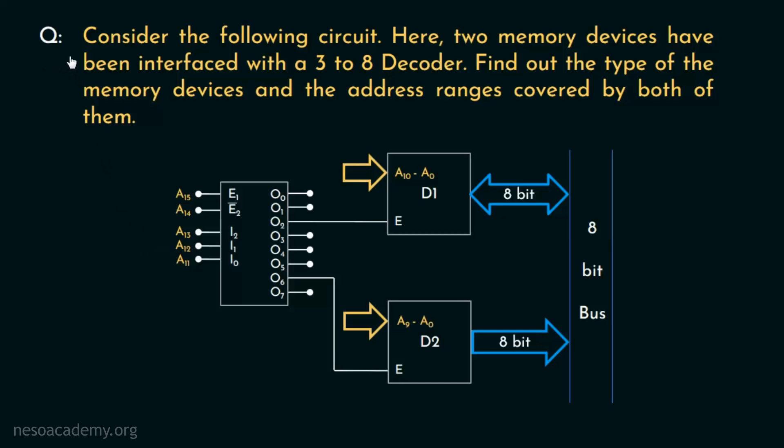Now the question states, consider the following circuit. Basically this is the circuit that we are supposed to consider. Here two memory devices have been interfaced with a 3 to 8 decoder. Now as you can see, this happens to be the 3 to 8 decoder and these devices D1 and D2 are the aforementioned memory devices. We are to find out the type of these memory devices and the address ranges covered by both of them.